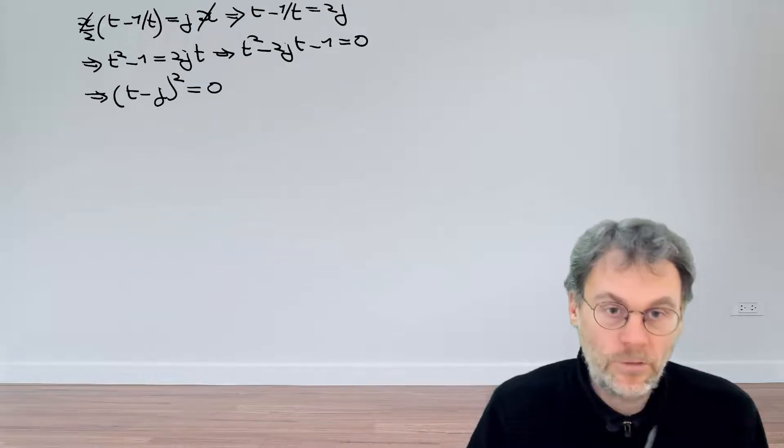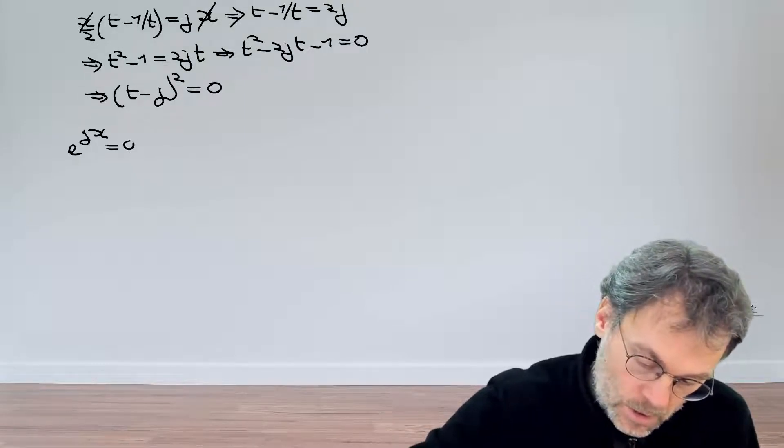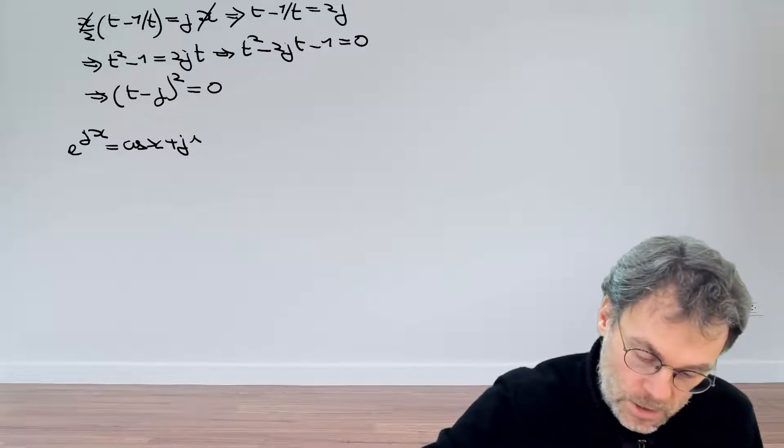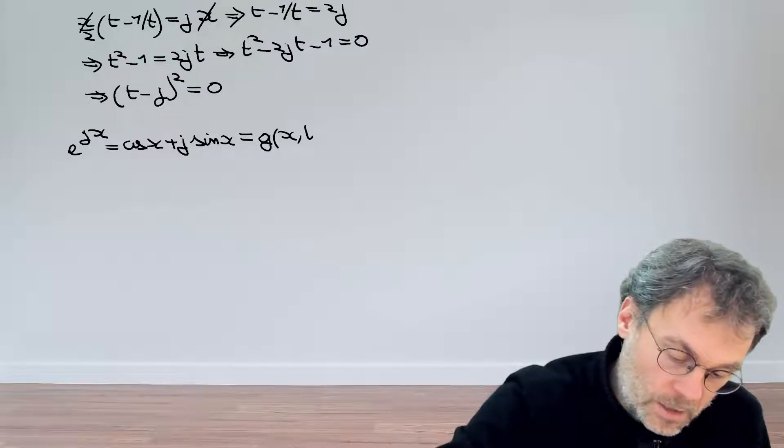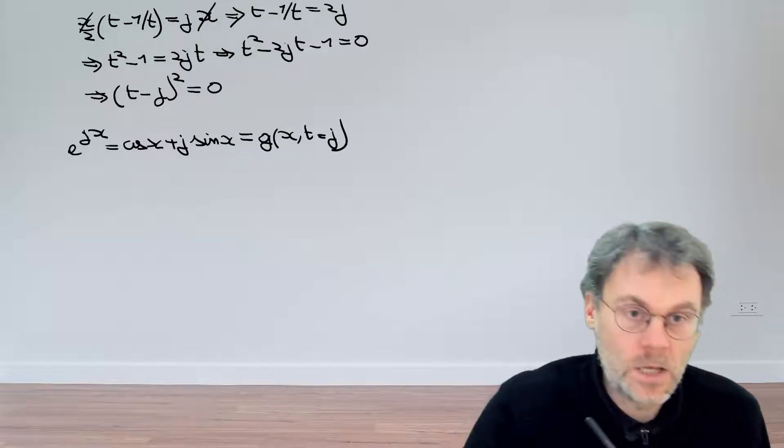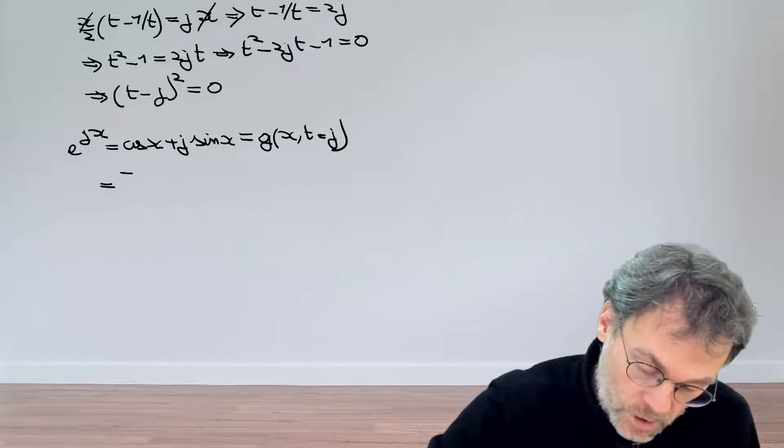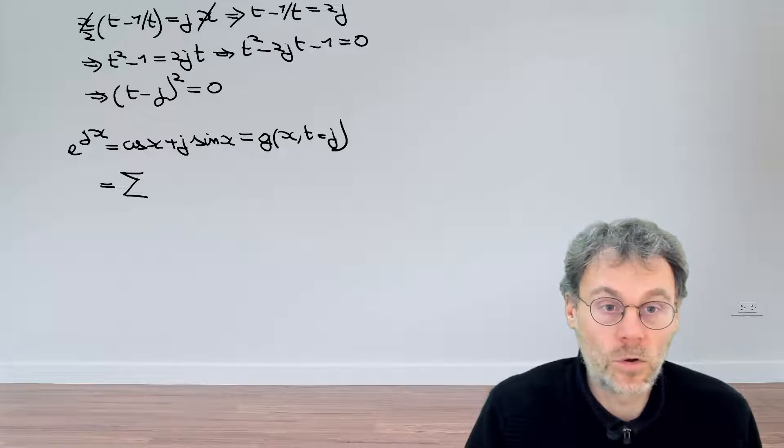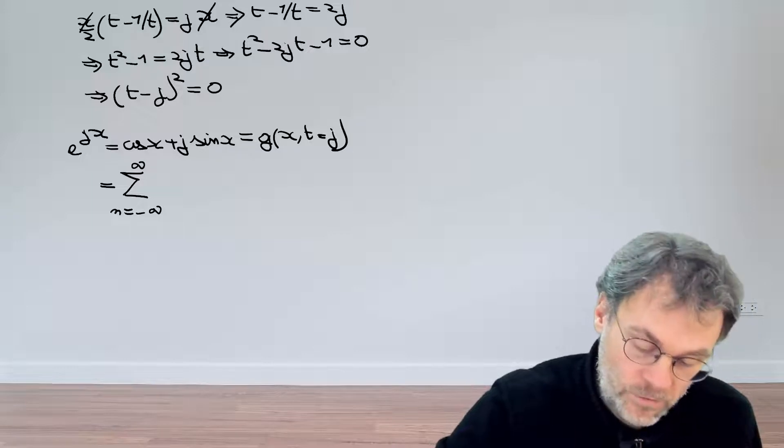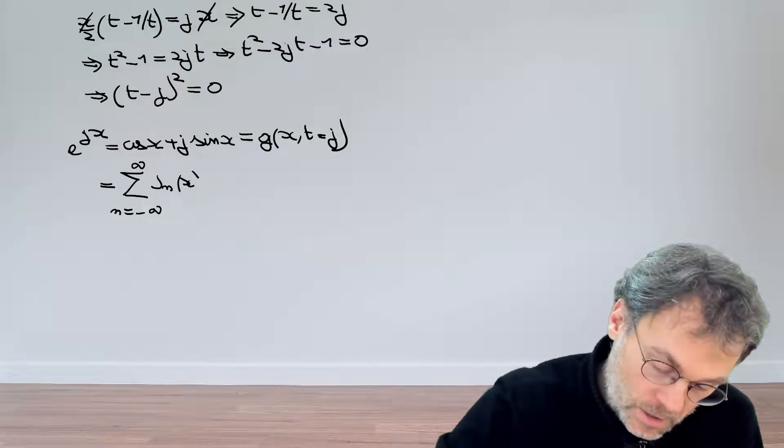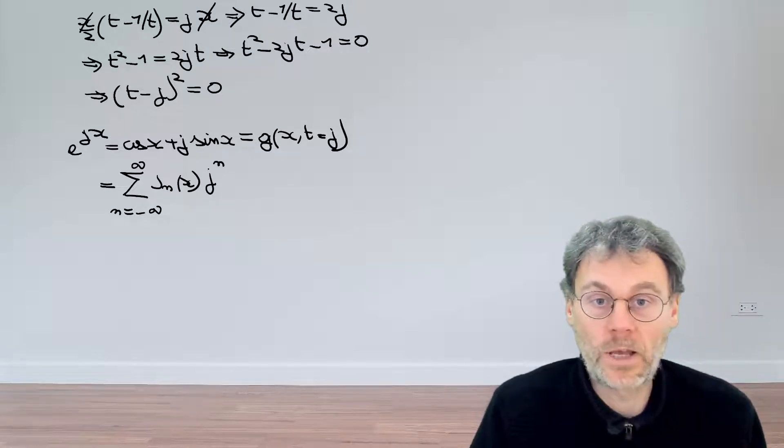So what do we have now? We have that exponential jx, also known as cosine x plus j sine of x, we get that expression by having our generating function and then substituting j for t. We also know that we can write that generating function as a sum of Bessel functions of different order. So a sum going from minus infinity to plus infinity of J_n(x) and then t to the power of n, that's going to be j to the power of n.